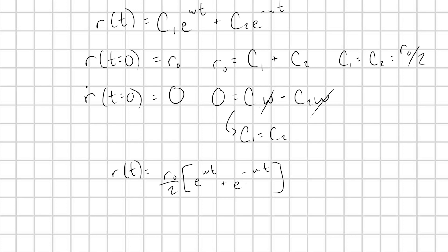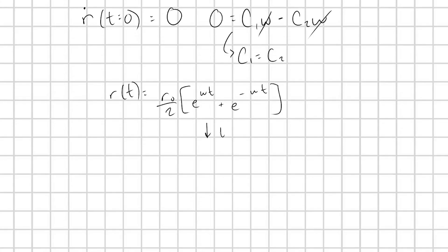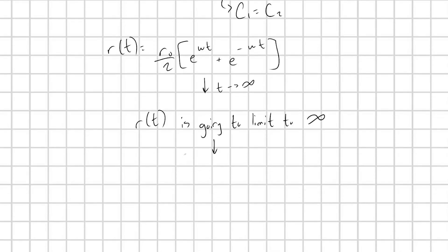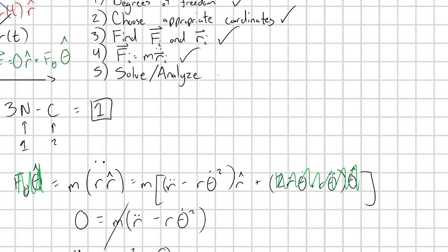Very cool. And by the way, what's the long-term behavior? What happens if t goes to infinity? As t goes to infinity, this second exponential term is going to die off. And this exponential term is going to blow up to infinity. So in other words, r of t is going to limit to infinity. It's basically going to blow up. And so eventually, my bead will fly off the rod. It's going to keep moving outwards until it flies off the rod. And so we can check off step five.